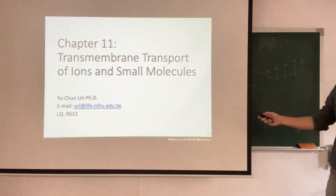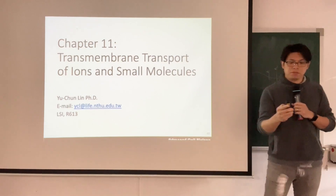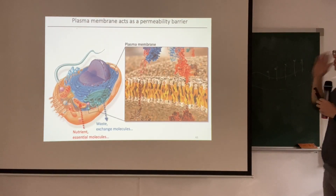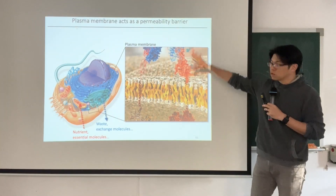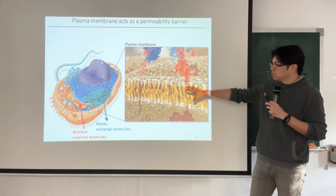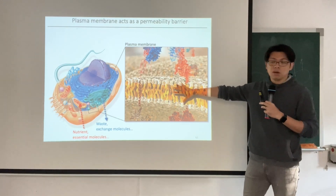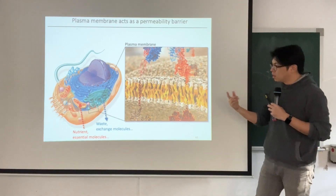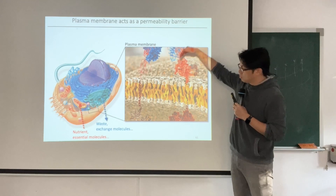Let's move on to Chapter 11: transmembrane transport of ions and small molecules. As I mentioned before, the plasma membrane allows cells to exchange molecules, and they need to transport a lot of different things across the membrane. In the previous two classes, we showed how proteins locate on or within the membrane. Now we'd like to introduce how molecules travel across the membrane.